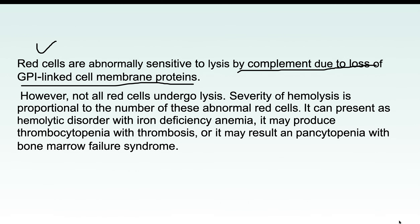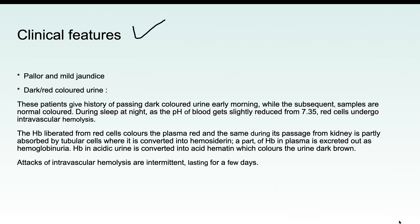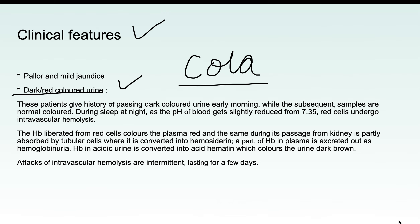Regarding clinical features: the patient presents with pallor and mild jaundice. A very peculiar and important finding is dark or red-colored urine. The characteristic urine color seen in PNH is known as cola-colored urine. Patients give a history of passing dark-colored urine early in the morning, with subsequent samples being normal colored.